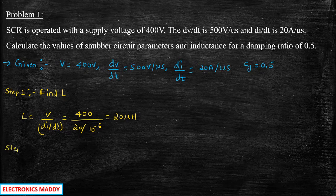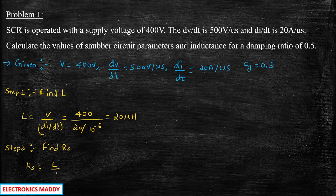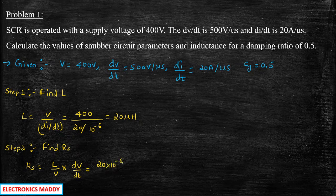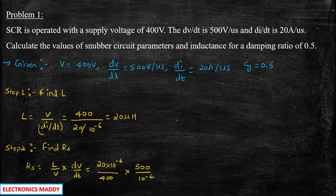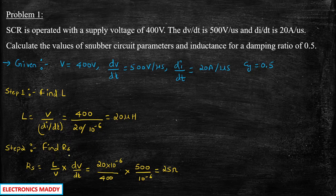Step 2: Find the value of RS. RS = (L/V) × (dV/dt). Substituting: RS = (20×10⁻⁶) / 400 × (500 / 10⁻⁶). Solving this expression, you get RS = 25 ohms. So we now know the value of L and the value of RS.